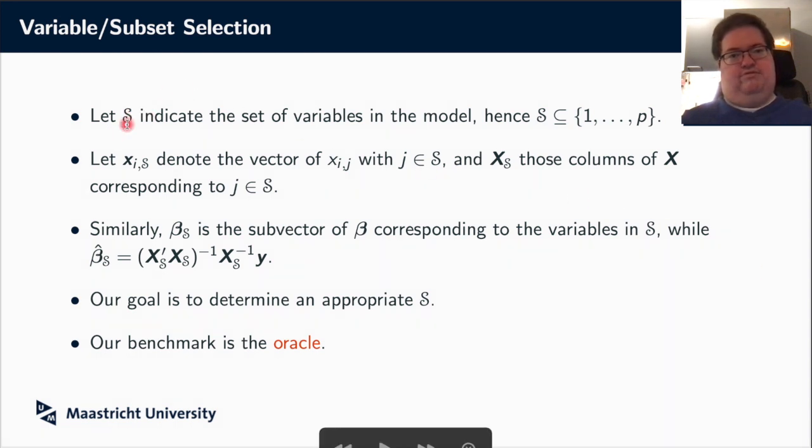Let calligraphic S indicate the set of variables that we include in the model. In particular, S is a subset of the integers from 1 up to p. So if we include variables 1, 3, and 5, S will be the set {1, 3, 5}.